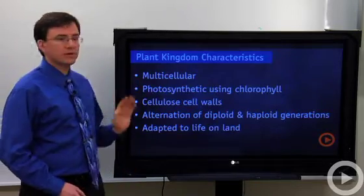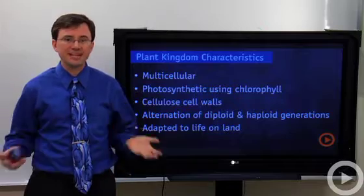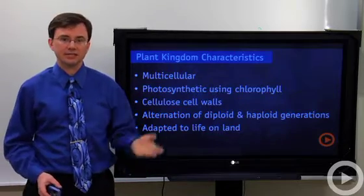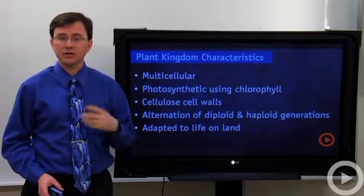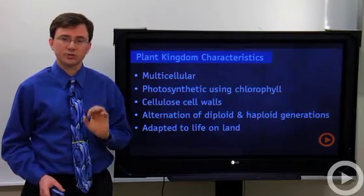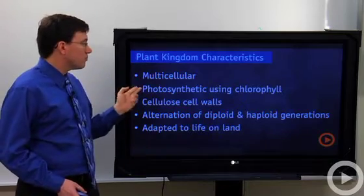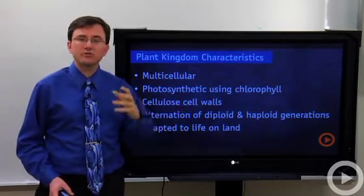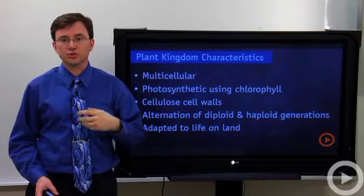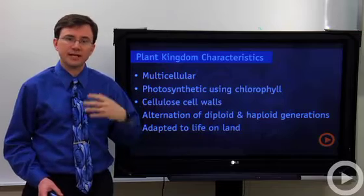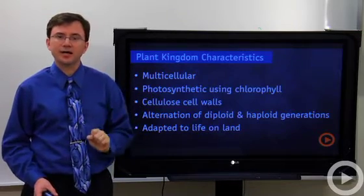The first of the plant characteristics is that they're multicellular. They have lots of cells in them, as opposed to things like cyanobacteria, the blue-green algae, which are single-celled. Plants are all photosynthetic and they use a chemical called chlorophyll to absorb light. That gives plants their characteristic green color.